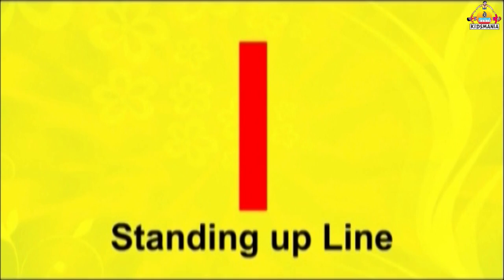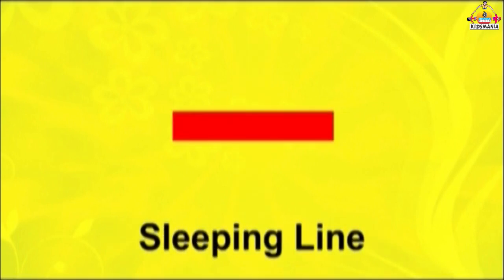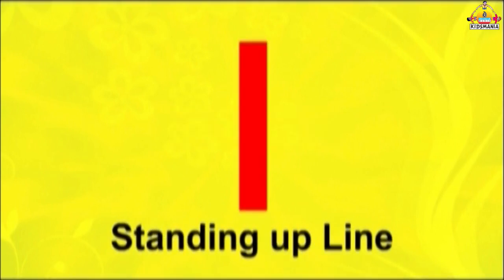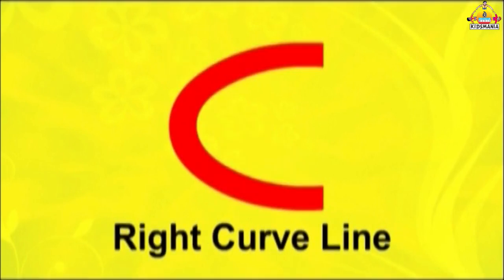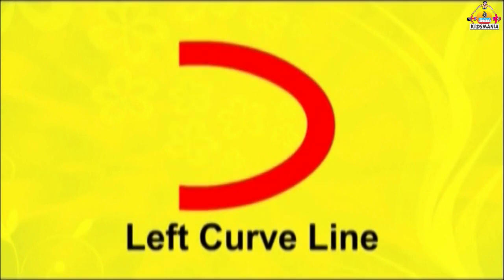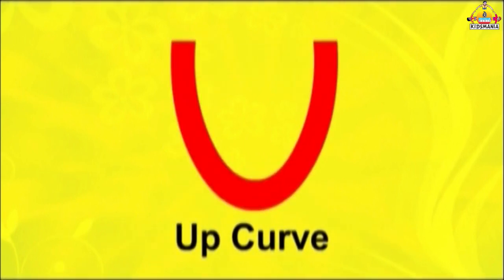This is a standing up line. This is a sleeping line. This is a right slanting line. This is a left slanting line. And look at this — this is a right curve. This is a left curve.